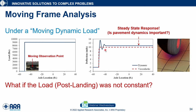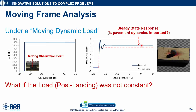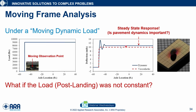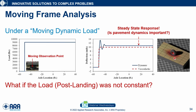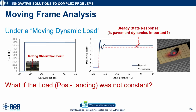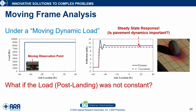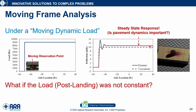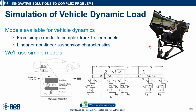Coming back to this concept: once the transient response dies out, the pavement response approaches a steady-state. In this case, the steady-state response was simply constant because the load magnitude was constant. That is why the earlier animation didn't look like the pavement was deflecting in any different way — the response was constant everywhere. So the interesting question is: what if the load in the steady-state portion was not constant?